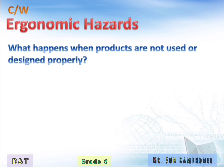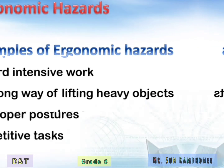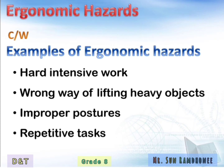Ergonomic hazards. What happens when products are not used or designed properly? Previously we mentioned examples of the claw hammer, the food can opener, and the keyboard. The answer is that this can lead to injuries or a lot of pain. A hazard refers to danger. Examples of ergonomic dangers include hard intensive work, the wrong way of lifting heavy objects, improper postures, and repetitive tasks.